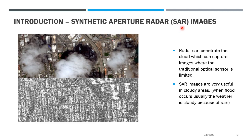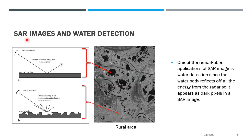SAR refers to synthetic aperture radar, so a SAR image is an image taken from a radar. As you can see in this figure, there is a difference between an optical image and a SAR image. The main advantage of a SAR image is that it can penetrate cloud, making it very useful for cloudy areas. A SAR image is also very useful for water detection, as we can see from the figure — all the water bodies can be easily identified because they appear as dark areas.